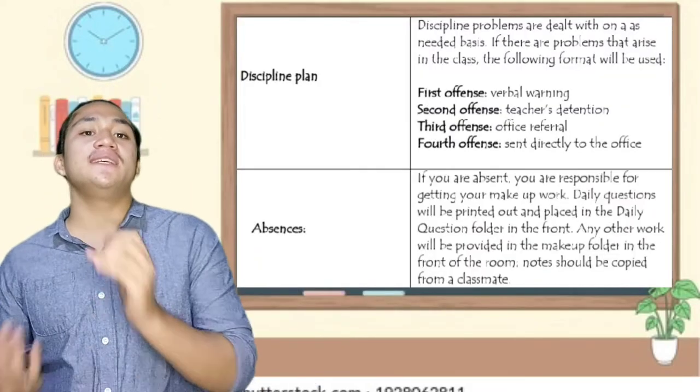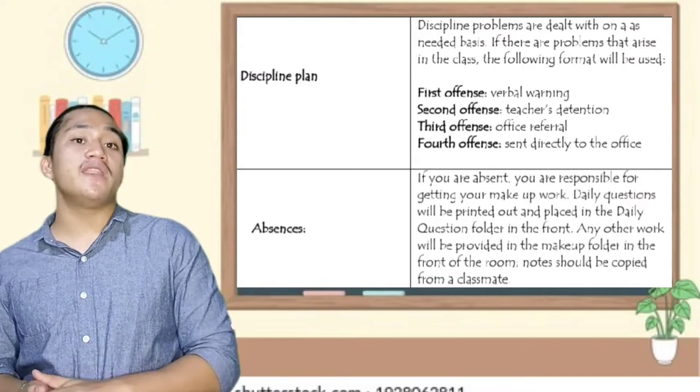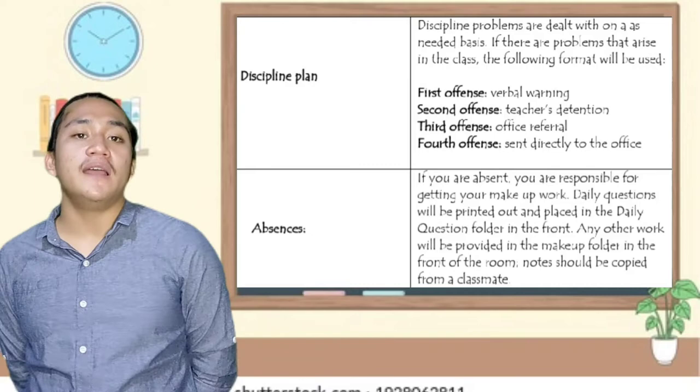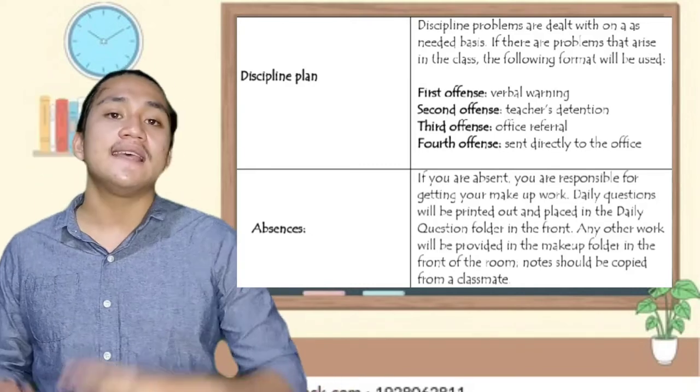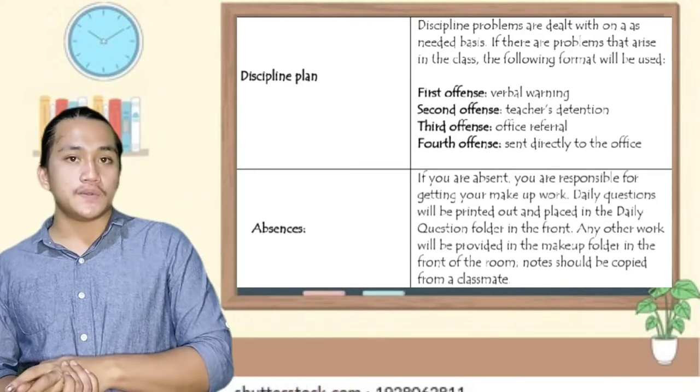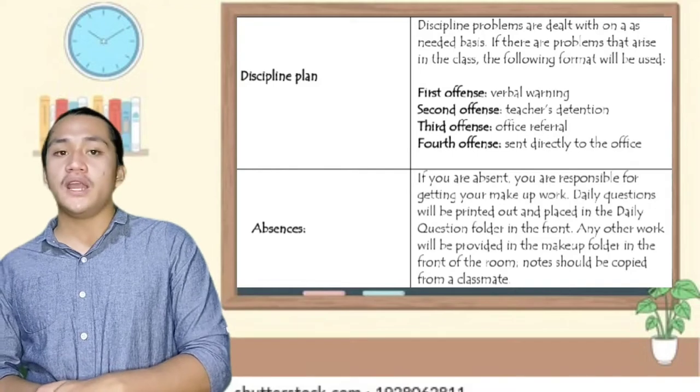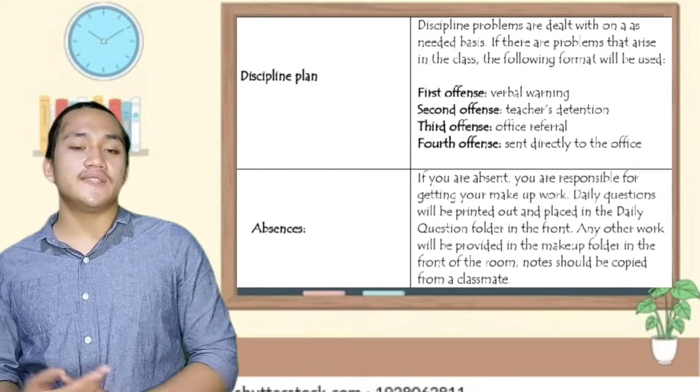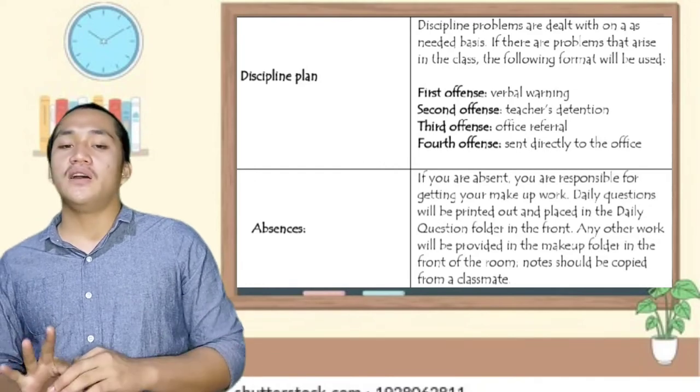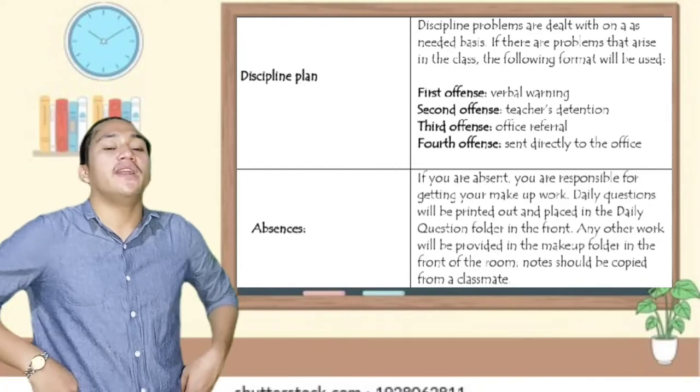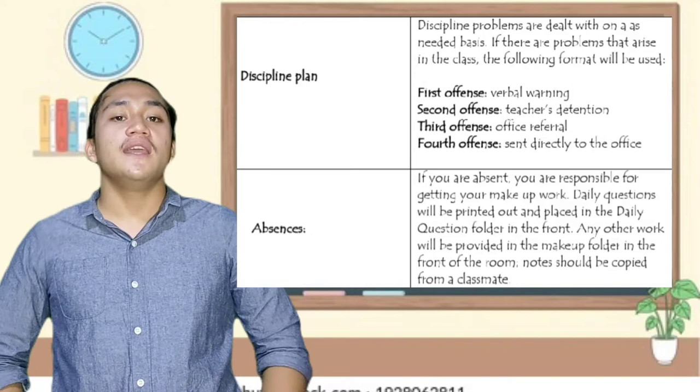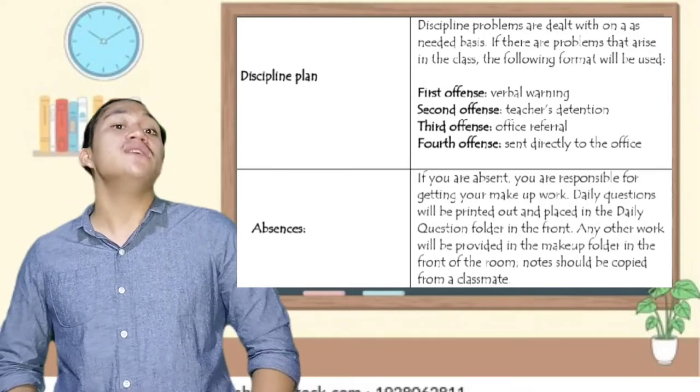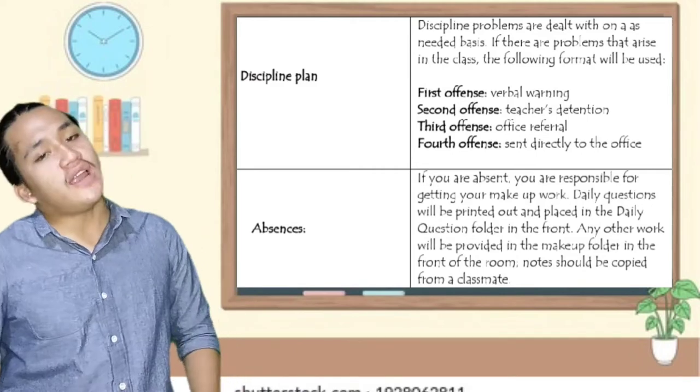Discipline plan: problems are dealt with on an as-needed basis. If there are problems that arise in the class, the following format will be used. First offense is verbal warning. Second offense is teacher's detention. Third offense is office referral. And the fourth offense is sent directly to the office.